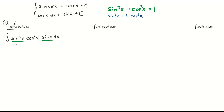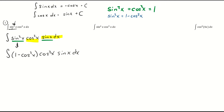Going back to my integral, I can substitute in for sine squared and say it's the same as 1 minus cosine squared x, times cosine squared x, times sine x dx. To recap: I look at the odd power, peel off one of those powers and save it at the end as sine x dx, then convert the remaining sine squareds into cosine squareds using the Pythagorean identity.